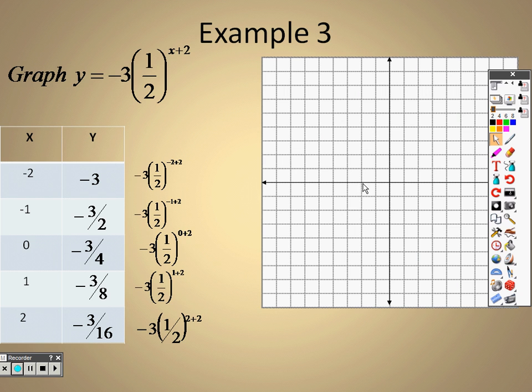So when I go to graph this, that means I go over 2 this way, and I go down 1, 2, 3, and there's the point. I go left negative 1, and I go down about negative 1.5, put the point there.